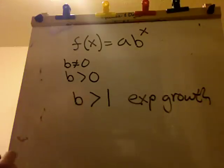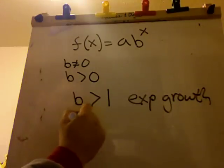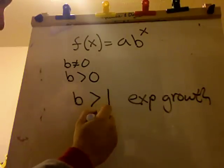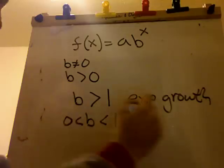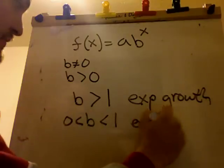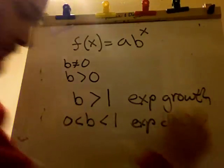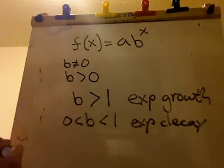An exponential decay occurs when b is less than 1, but greater than 0. So let's do a couple of examples.